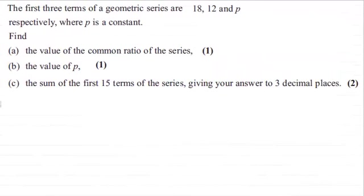Hi there. Now, for this question, we're told that the first three terms of a geometric series are 18, 12 and p, respectively, where p is a constant.